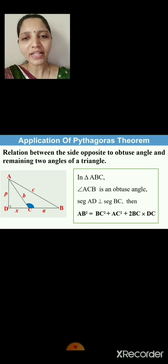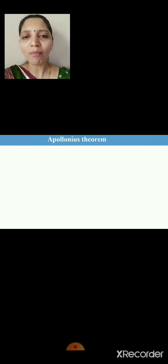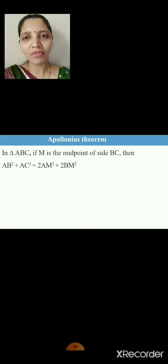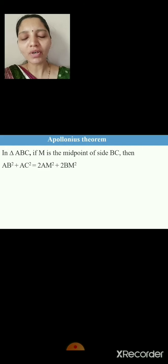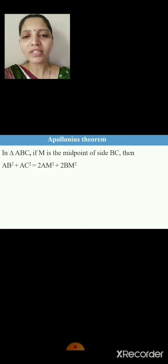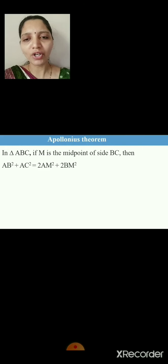Now let's start with the next theorem: the Apollonius theorem. This theorem is very important. The previous applications we have seen were leading to this. In triangle ABC, if M is the midpoint of side BC, then AB² + AC² = 2·AM² + 2·BM².